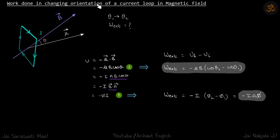Work done in changing orientation of a current loop in magnetic field. We are given a current loop which is kept in a magnetic field and its moment is making an angle theta with the field. Current i is going through the loop.